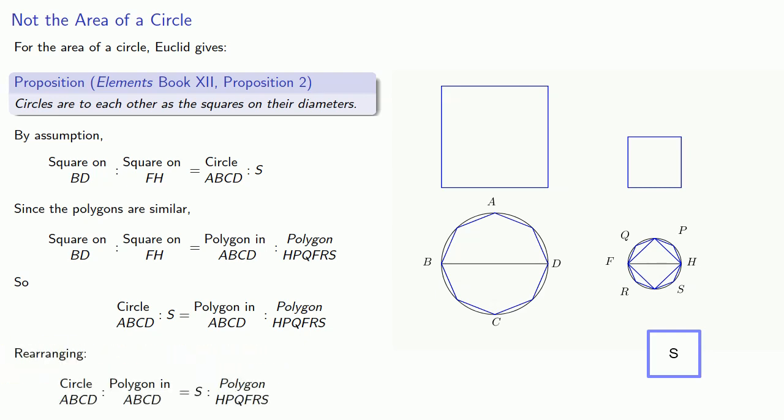And we can rearrange our proportionality so the circle is to its inscribed polygon as S is to the other inscribed polygon. But the circle is larger than its inscribed polygon, while S was smaller than the inscribed polygon. So this is impossible.